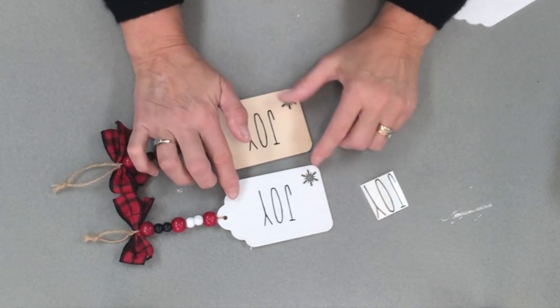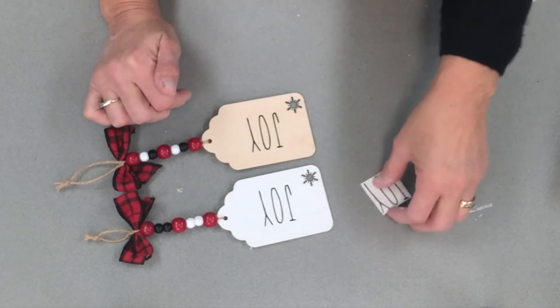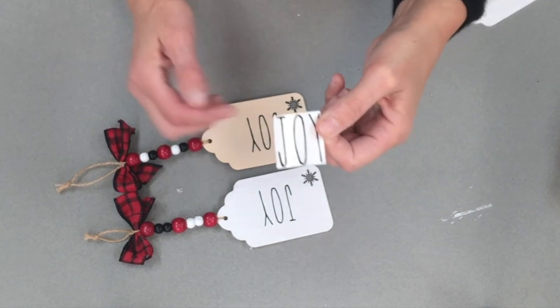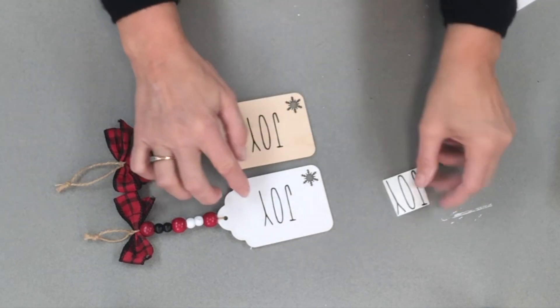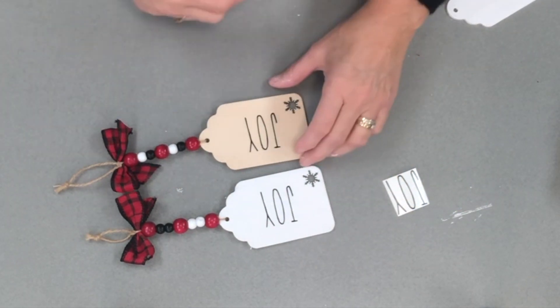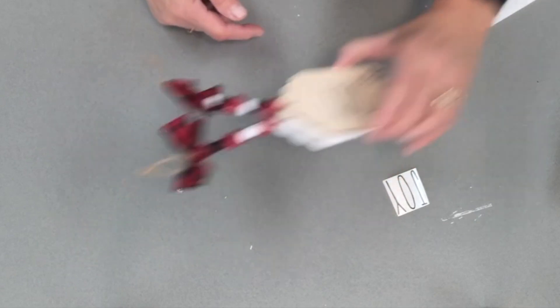But I will tell you guys, if you just have a black marker you can definitely write on these. So it's great if you've got a Cricut or a Silhouette and you can cut out a word, but by all means you could freehand write on these too.